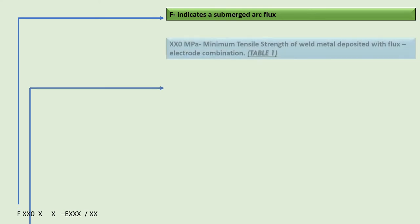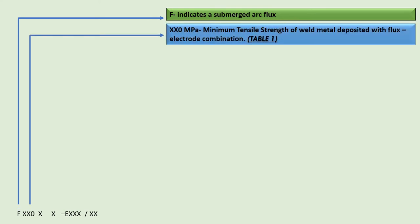Let us understand the designators constituting the flux electrode classification for SFA 5.39 — the specification for flux and electrode combinations for submerged arc and electro-slag joining and surfacing of stainless steel and nickel alloys. The designator F indicates a submerged arc flux, followed by a three-digit number indicating the minimum tensile strength of weld metal deposited with the flux electrode combination, as detailed in SFA 5.39 Table 1.